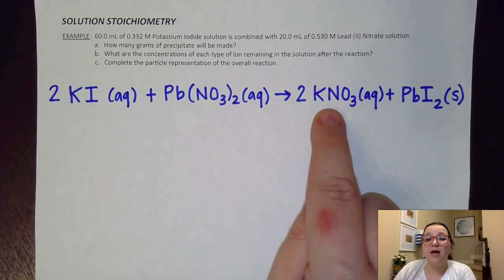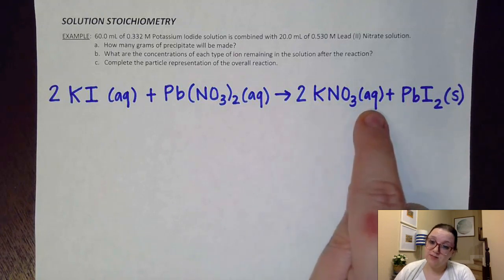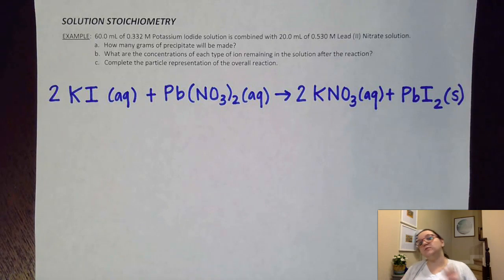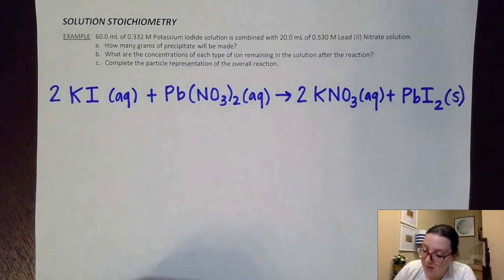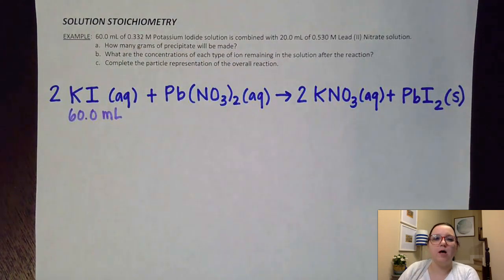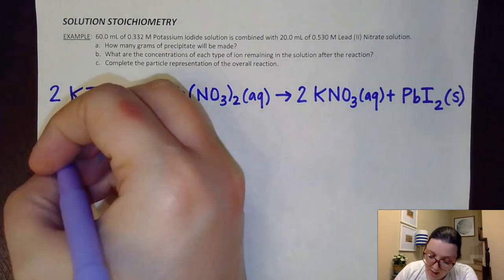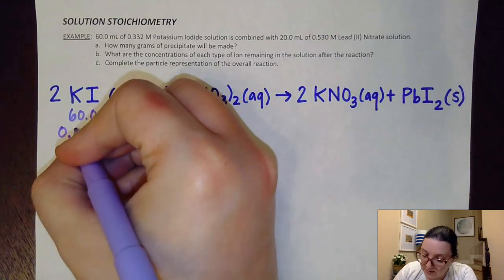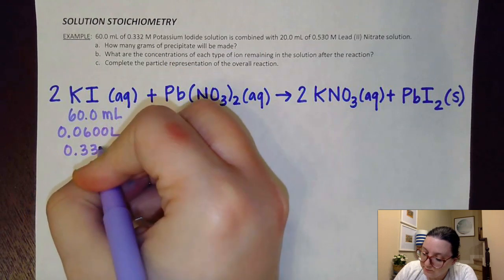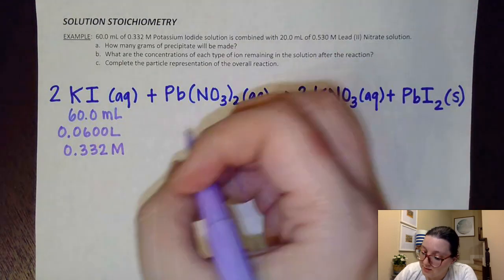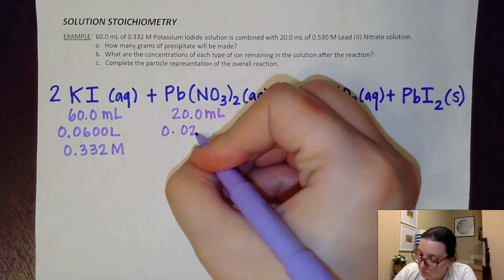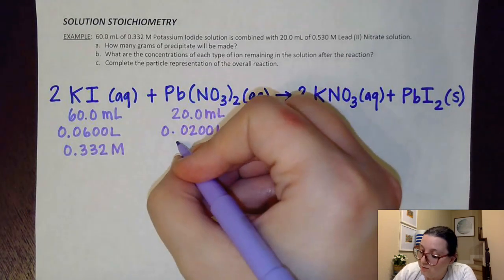Since KNO₃ has both a group 1 and a nitrate in it, I knew that had to be soluble. Therefore the lead iodide had to be my solid precipitate. Now I'm going to map out the information. For potassium iodide, I have 60 milliliters — converting that to 0.0600 liters — with a molarity of 0.332. For lead nitrate, I have 20 milliliters, which is 0.02 liters, with a molarity of 0.530.